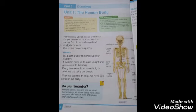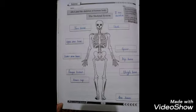Dear students, look at this picture. The bones of your body make up your skeleton. The skeleton helps us to stand upright and gives shape to the body. Every time we walk, sit on a chair, or bend, we are using our bones. We have 206 bones in our body.